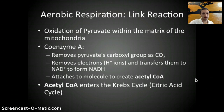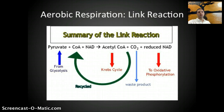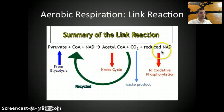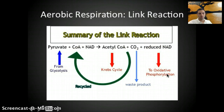In this image, we can see all of this put together. Pyruvate from glycolysis plus coenzyme A plus NAD+ produces acetyl-CoA and CO2. The CO2 is the waste product, and the NAD+ gets reduced to become NADH. That NADH goes to oxidative phosphorylation, which happens in the electron transport chain, and the acetyl-CoA goes to the Krebs cycle.